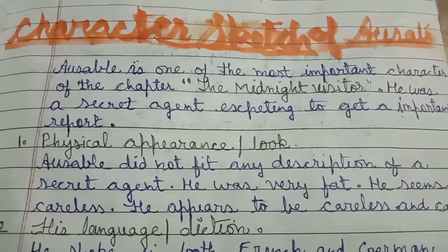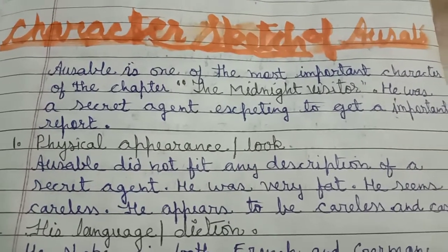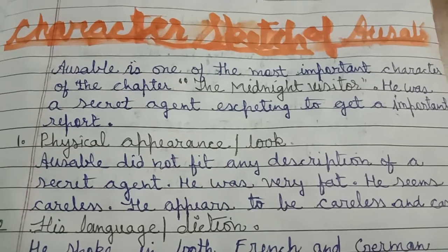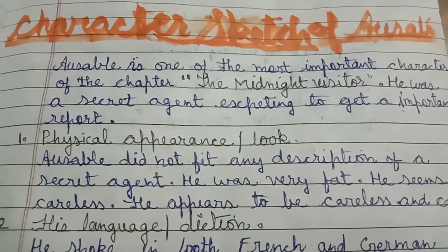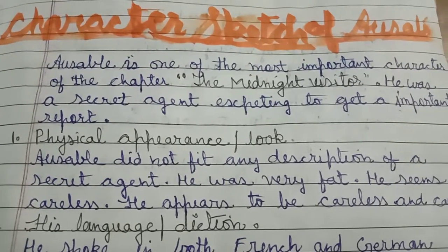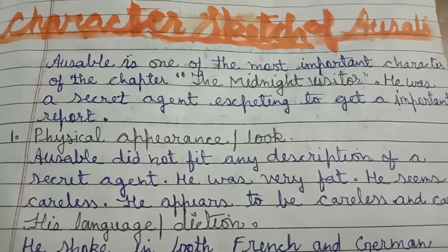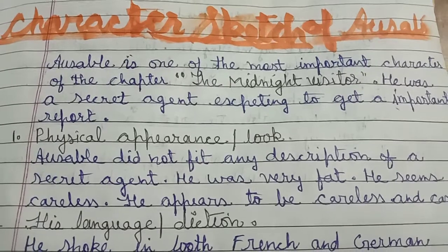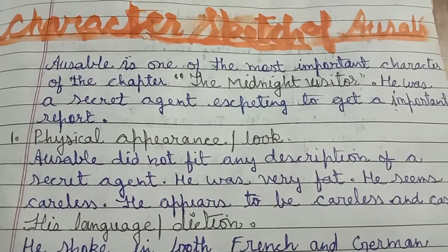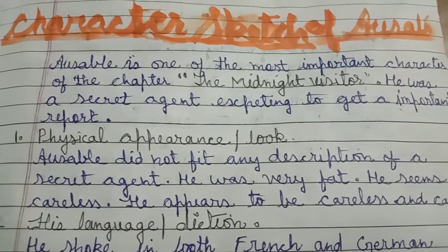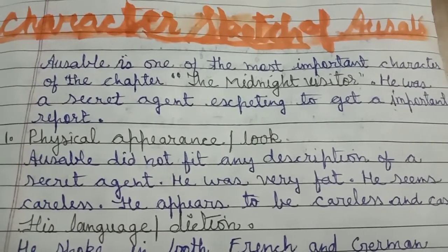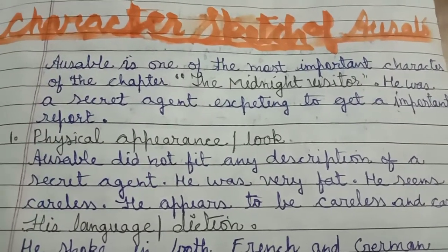He was a secret agent expecting to get an important report. Ausable is a very important character in 'The Midnight Visitor' — a secret agent who was able to get an important report.